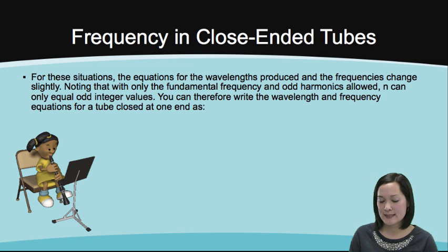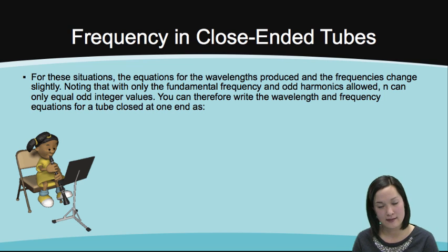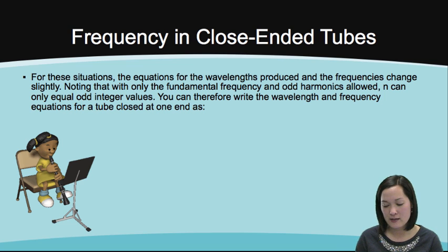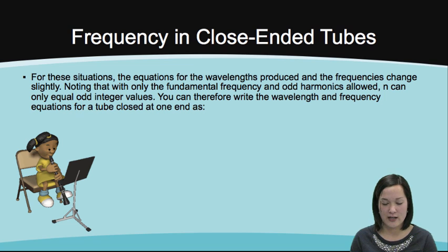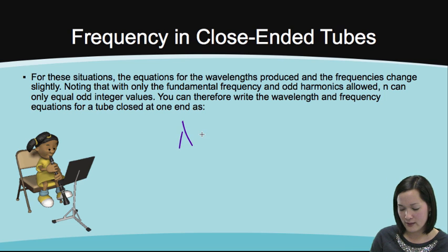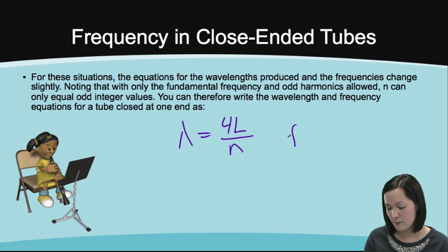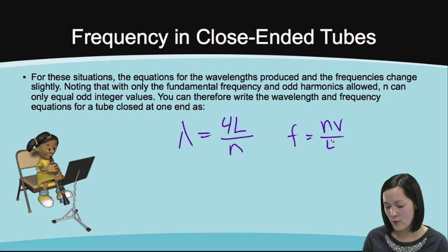To find the frequency in closed-end tubes, the equations for wavelength and frequency change slightly. Noting that only the fundamental frequency and odd harmonics are allowed, N can only equal odd integer values. You can therefore write the wavelength equation as lambda equals 4 times the length of the tube over N, and frequency equals N times v over 4 times the length.